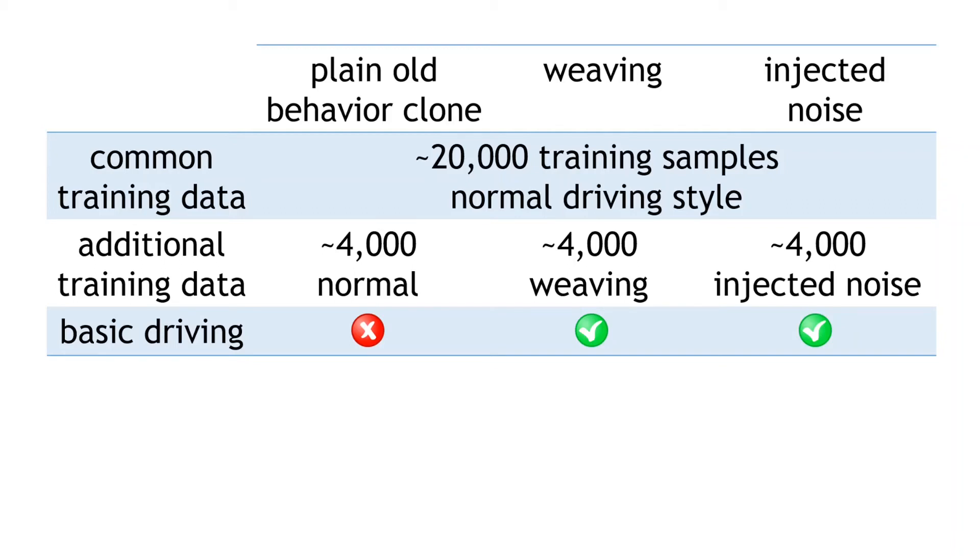So it seems that by providing some additional training data that gives a broader range of input images, it does improve the performance of the policy. But before moving on, it would be good if we had some method of objectively comparing different policy models.